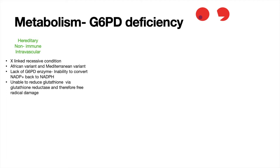The G6PD enzyme is important because it's required to reduce glutathione, and glutathione can only work if it's in its reduced state. Glutathione is an important antioxidant which prevents our body from experiencing oxidative stress. Without G6PD, glutathione cannot be reduced, so it can't protect us from oxidative stress, resulting in free radical damage that causes red blood cells to become destroyed and split apart.